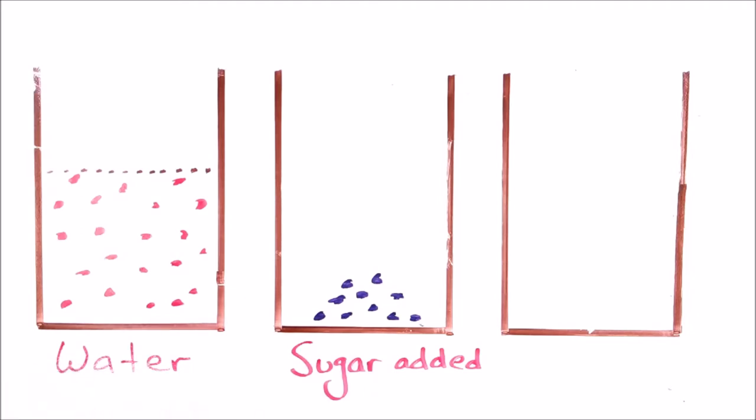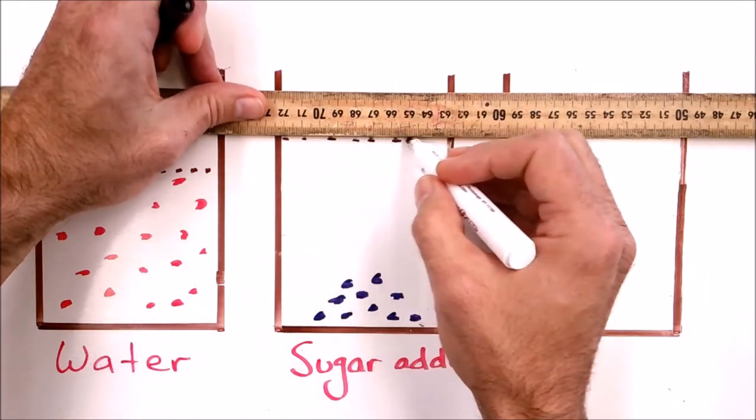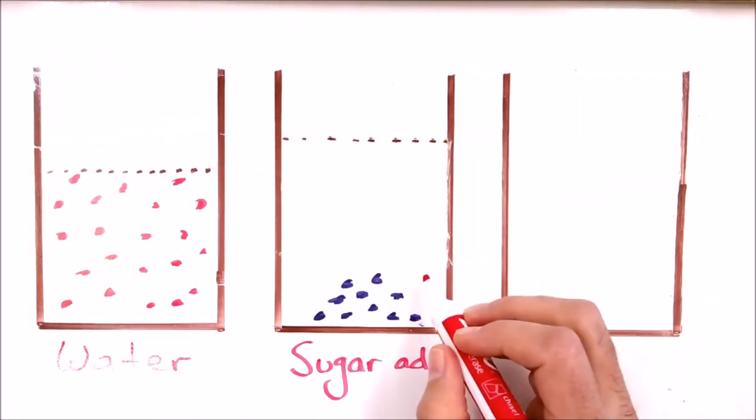Now, the number of water particles has not changed, so I will draw 20 of the water particles. And we made an observation in the experiment where we saw that the volume of the liquid had increased. So we'll show that here. And now our 20 water particles.